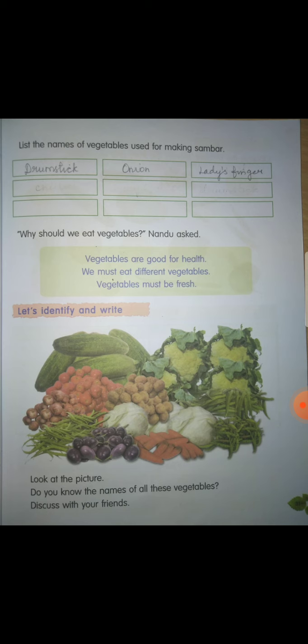So in today's class, more vegetables that are used for cooking will be covered. For example, for your lunch, what did your mother prepare? For example, tomato rice — what are all the vegetables used in that? Onion, tomato, chillies, and peas, likewise. So here in your book they have discussed and asked about the vegetables used for sambar.